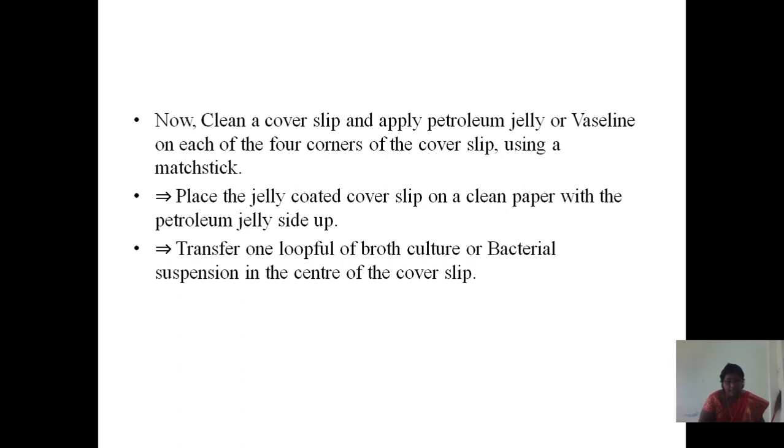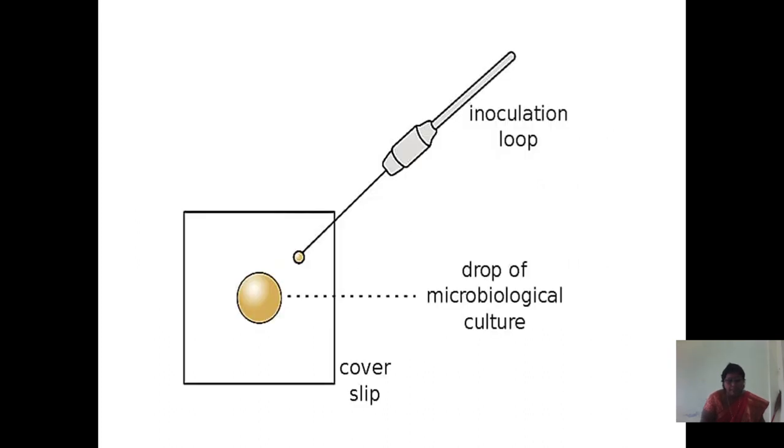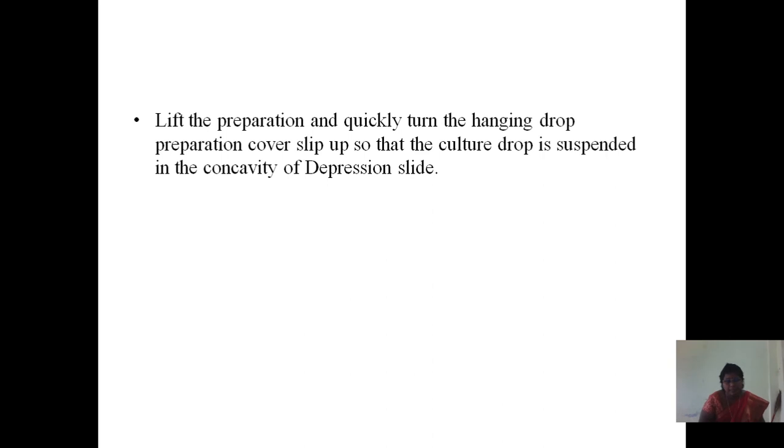Transfer a loopful of broth culture or bacterial suspension to the center of the coverslip. Note: the drop should not be too large or too small, and the size should be adjusted as per the dimensions of the coverslip and cavity slide. Place the depression slide onto the coverslip with the concavity facing down so that the depression covers the suspension drop. Press the slide gently to form a seal between the coverslip and the slide to prevent evaporation of the specimen. Then quickly lift up the depression slide and turn it so the hanging drop is suspended into the concavity of the depression slide.